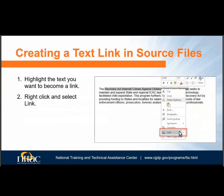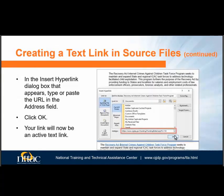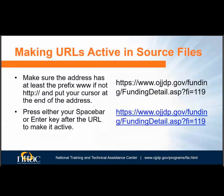Creating a link of text is relatively easy. Highlight the text you want to be a link, right-click, and select Link, then Insert Link. A dialog box will appear. Type or paste your link in the web address field at the bottom of the dialog box and press OK. Your link will now be an active text link. Making URLs active is easy in PowerPoint — simply press space or enter after your properly formatted URL and it will become an active link.